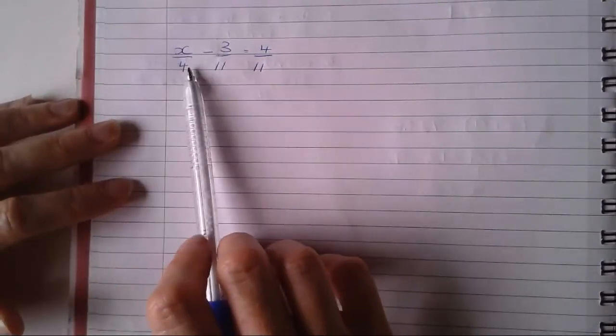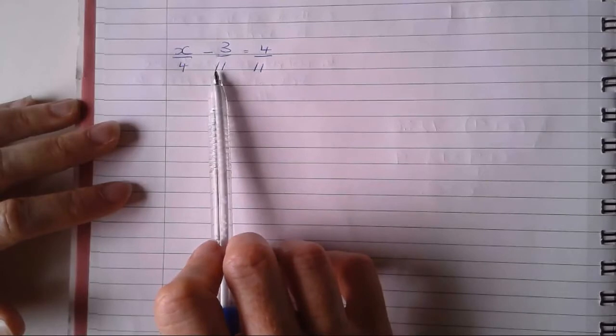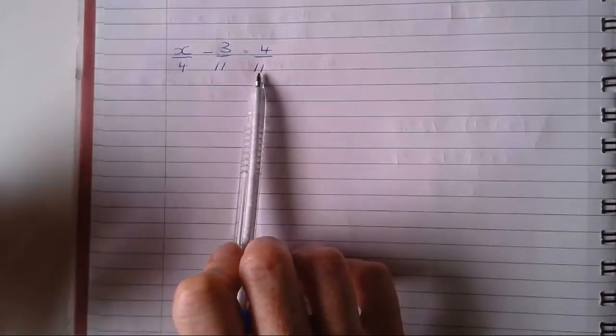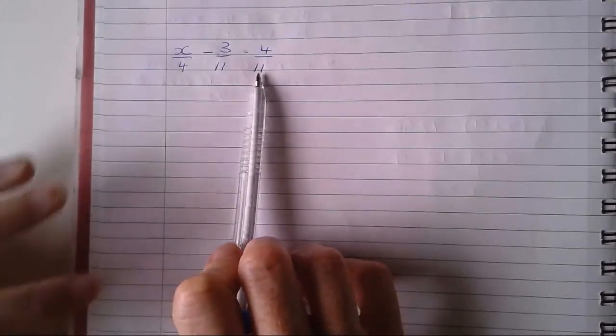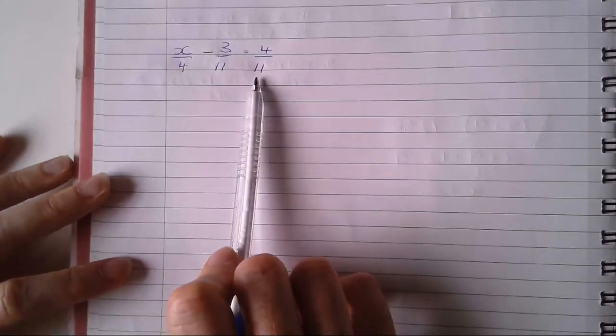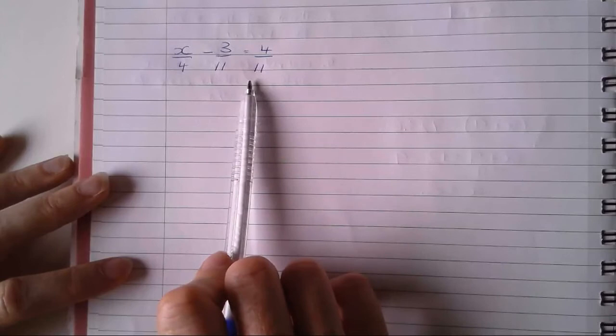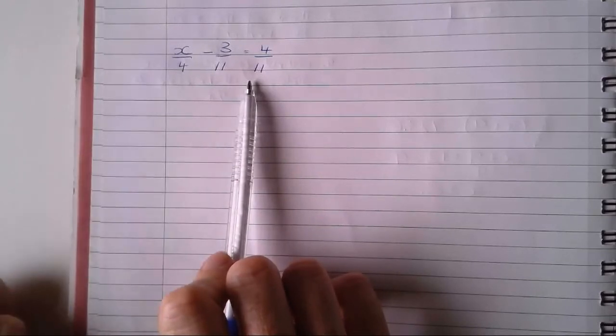So here I've got x over four, or x divided by four, take away three over eleven, equals four over eleven. So it's kind of handy with this example because I can see I've got a couple of fractions here that have the same denominator. And we know that whenever we're adding and subtracting denominators, they have to be the same on the bottom. The denominators must be the same. So that's really handy because I probably won't have to do any conversions.